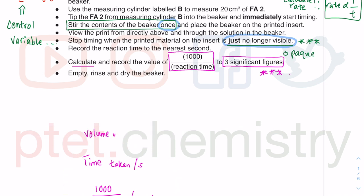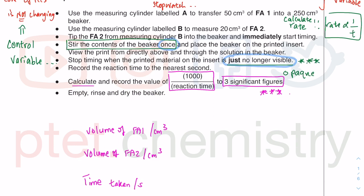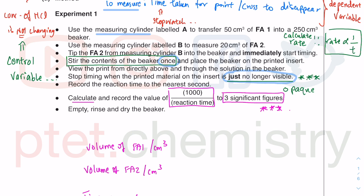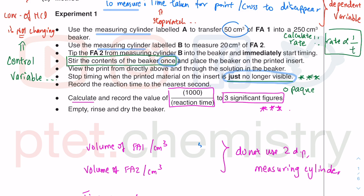The table has columns for volume of FA2, volume of FA1, and the calculated rate. In any experiment, come up with your headings — what you are putting in — and units are very important, as well as the data analysis. The last column must be to three significant figures. The volumes come from measuring cylinders, which are not the most accurate, so do not use two decimal places. Measure to the nearest whole number. 50 cm³ and 20 cm³ — I don't have to put in cm³ again because it's already in the header.